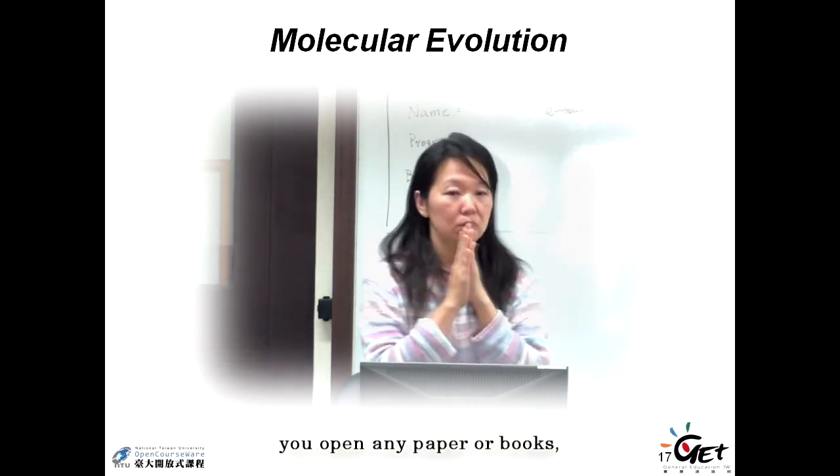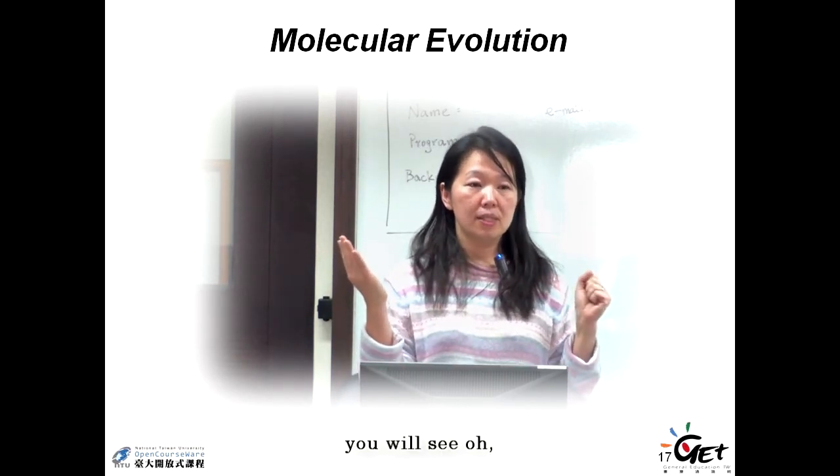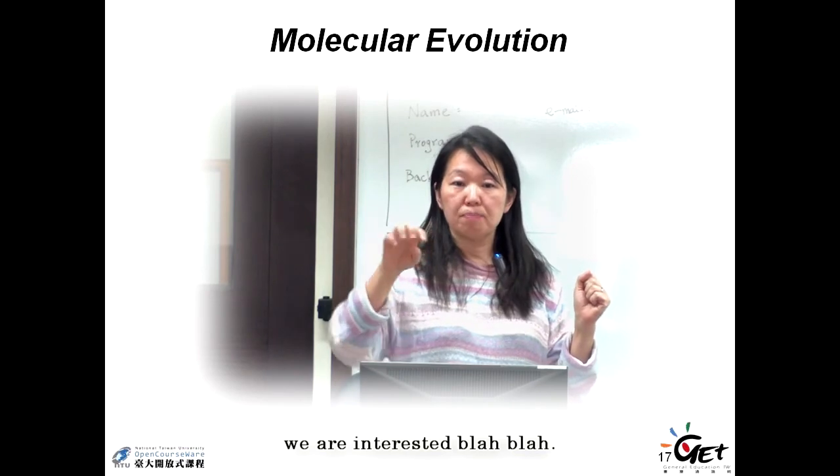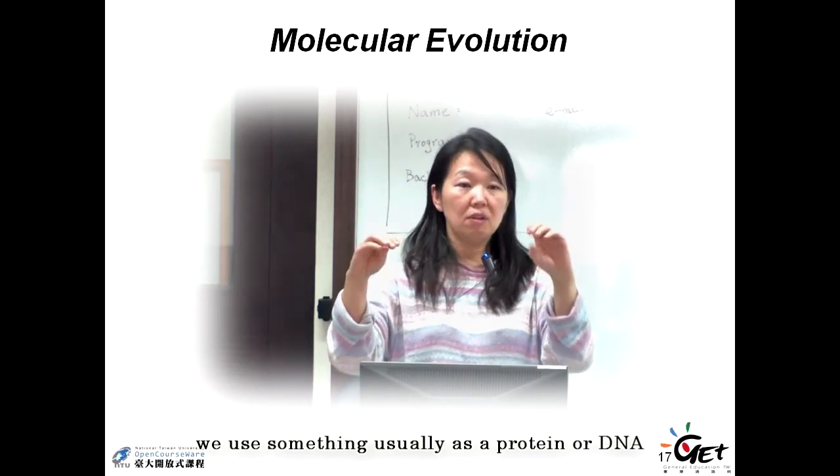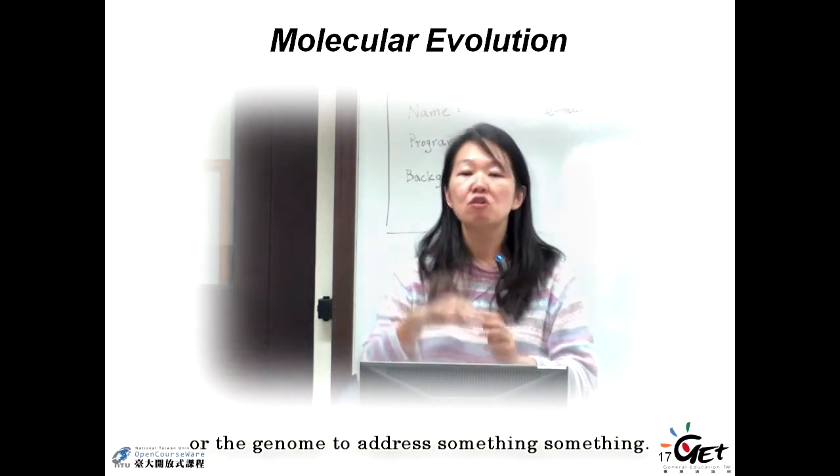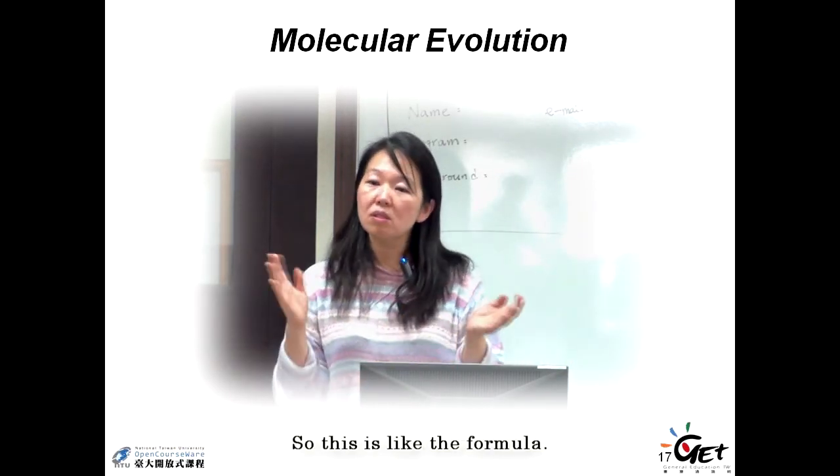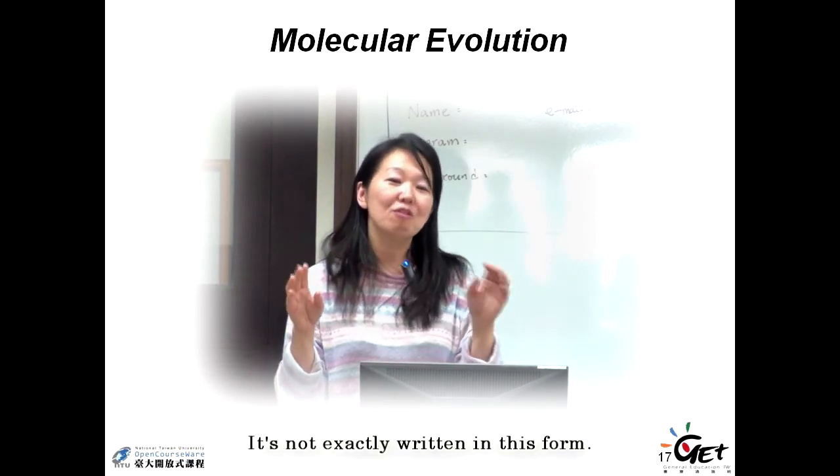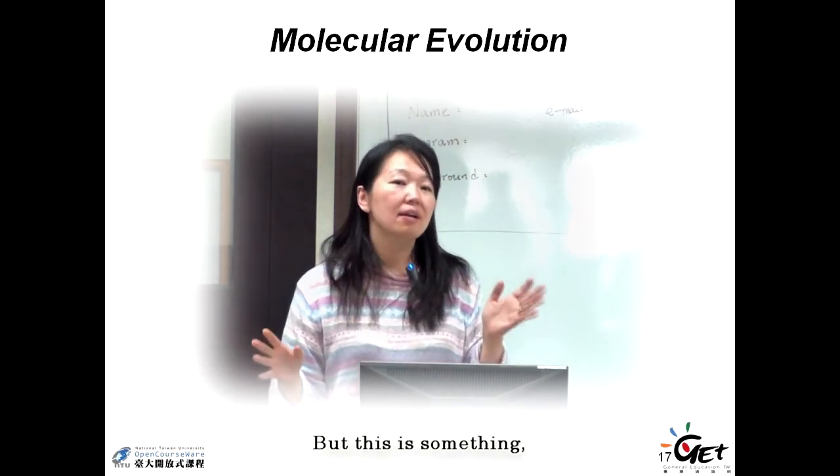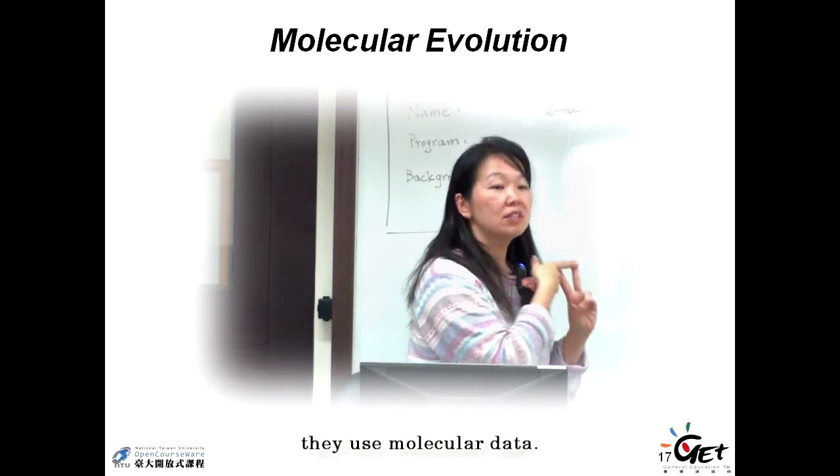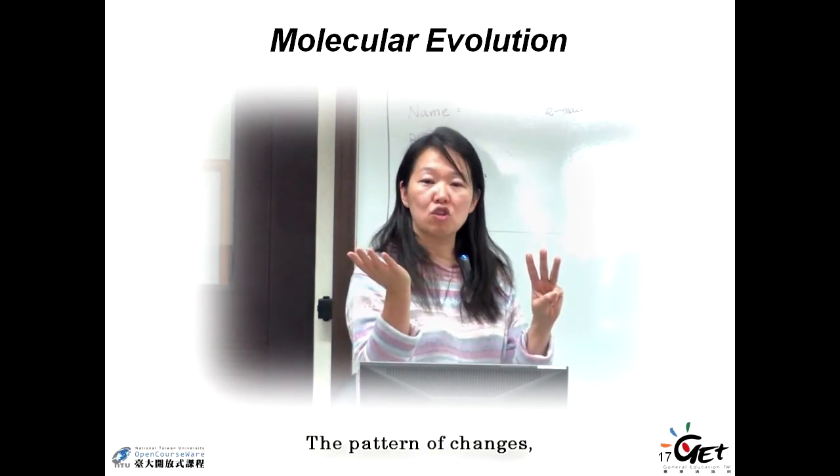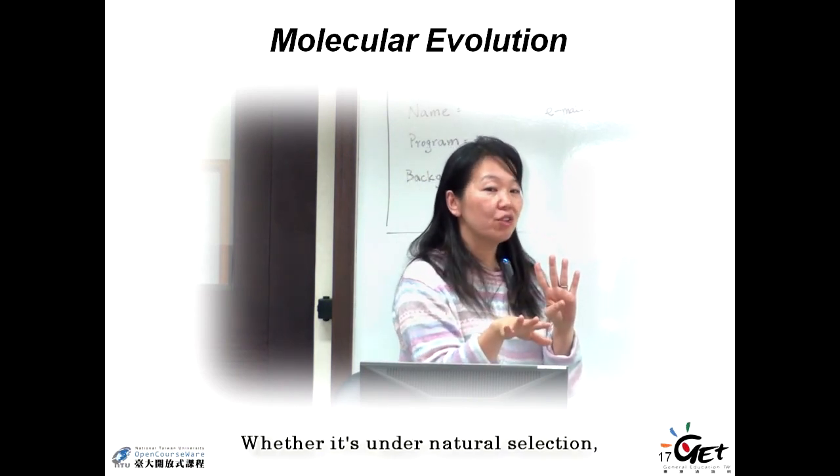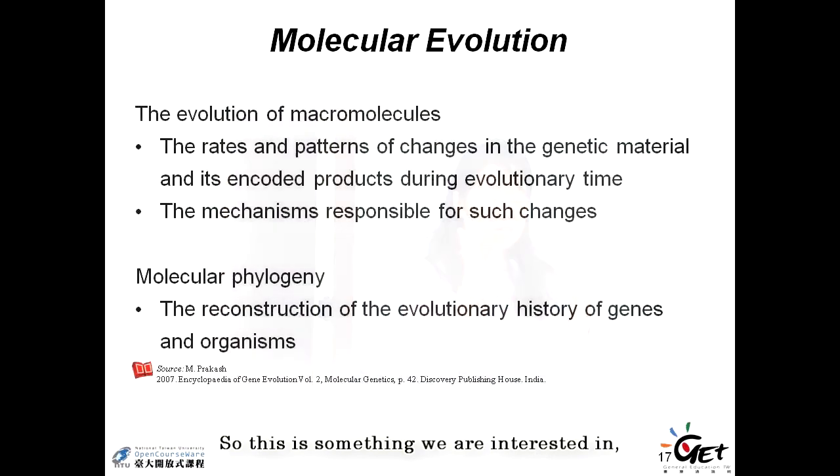In this field, you open any paper or books, you will see we are interested in a specific question. We use something, usually a protein or DNA or the genome, to address something. This is like the formula. It's not really exactly written in this form, but they have a specific question. They use molecular data to address a specific goal. So it's a pattern, like pattern of the changes, or it's the mechanism, whether it's under natural selection. This is something we are interested in, the major practice in this field.